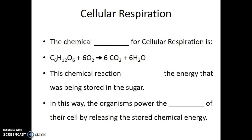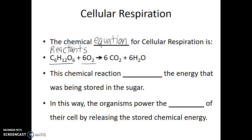In order for us to get energy out of the food that we eat, this is a chemical reaction known as cellular respiration. The chemical equation for cellular respiration looks similar to photosynthesis but is somewhat flipped or reversed. In cellular respiration, our reactants are glucose and oxygen gas, whereas the products are carbon dioxide and water.